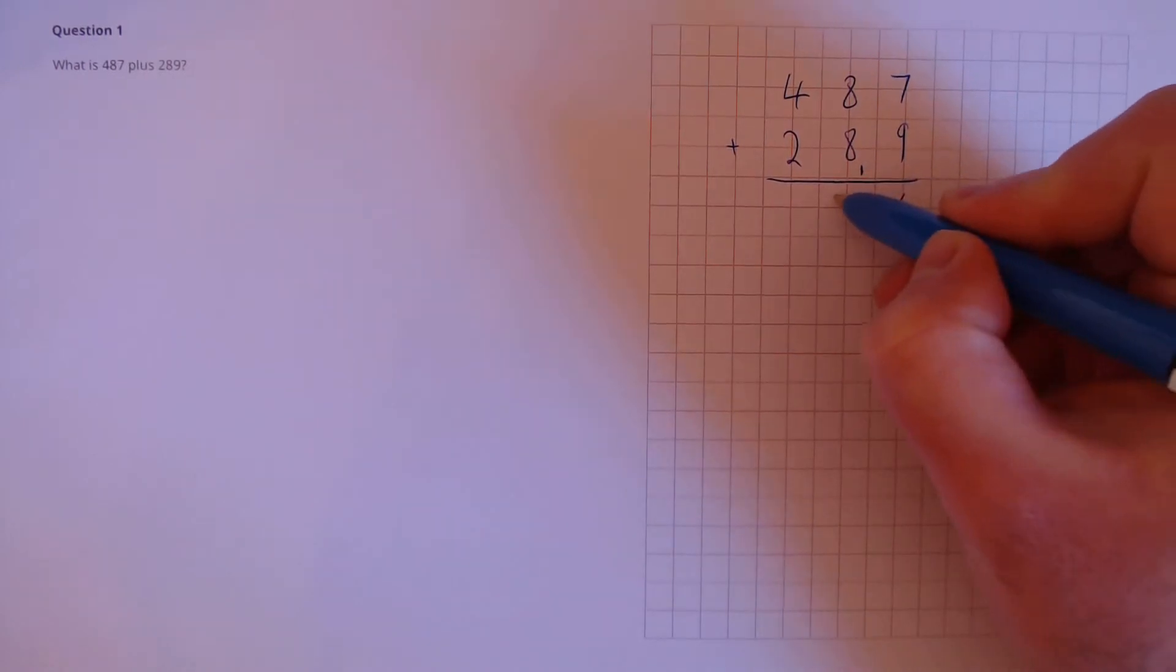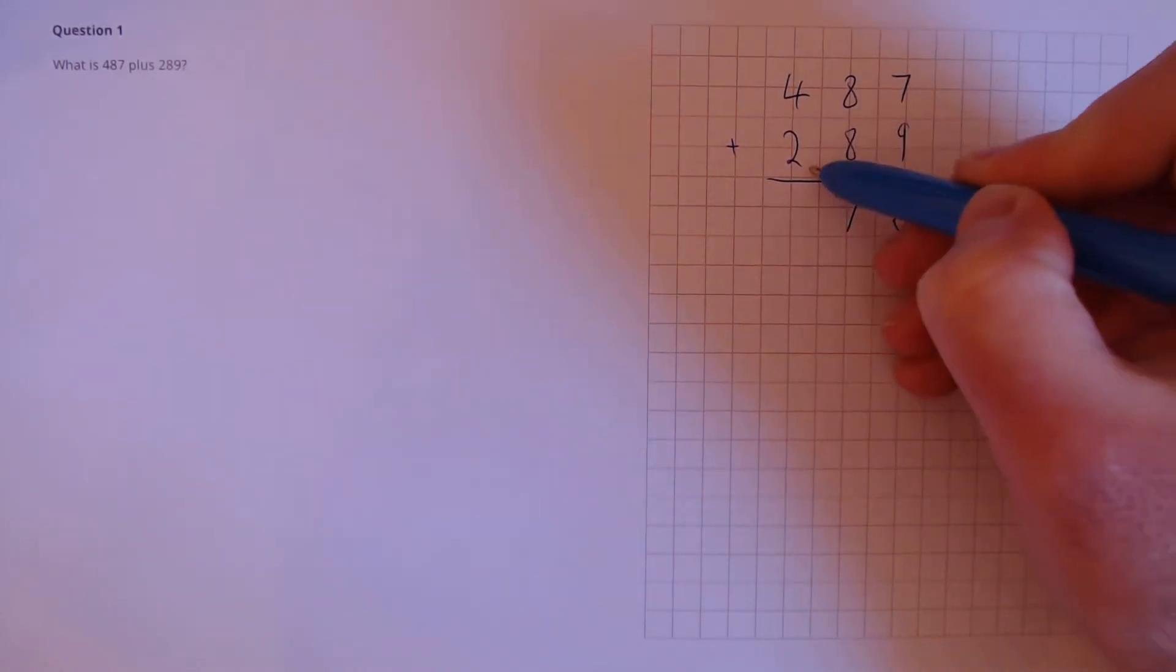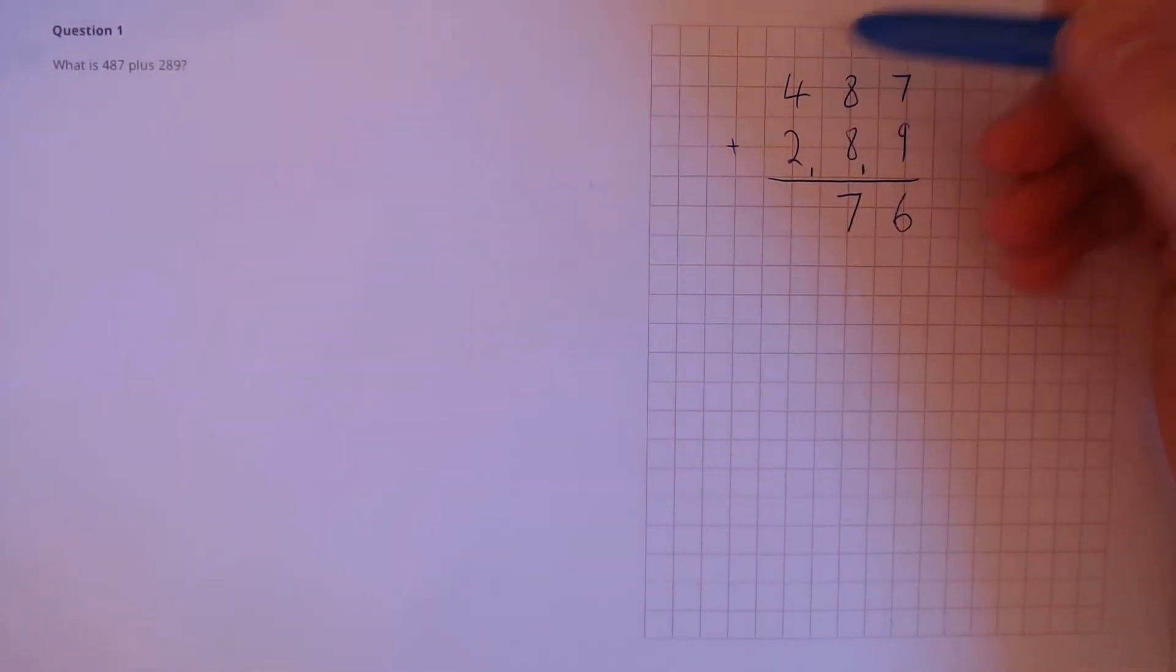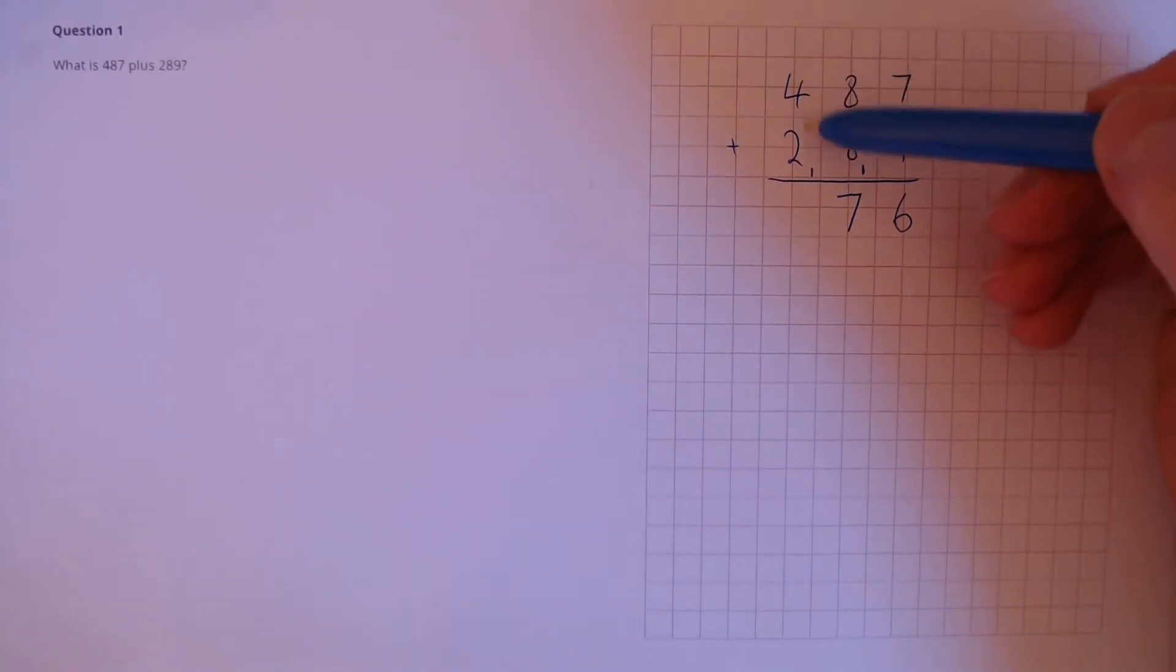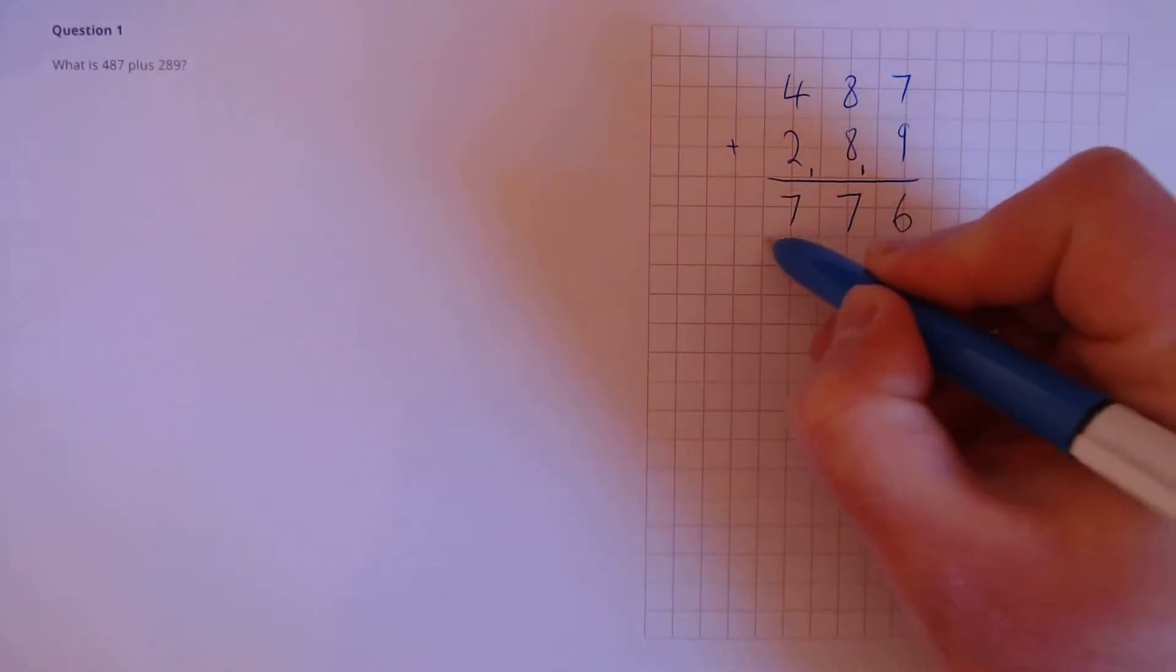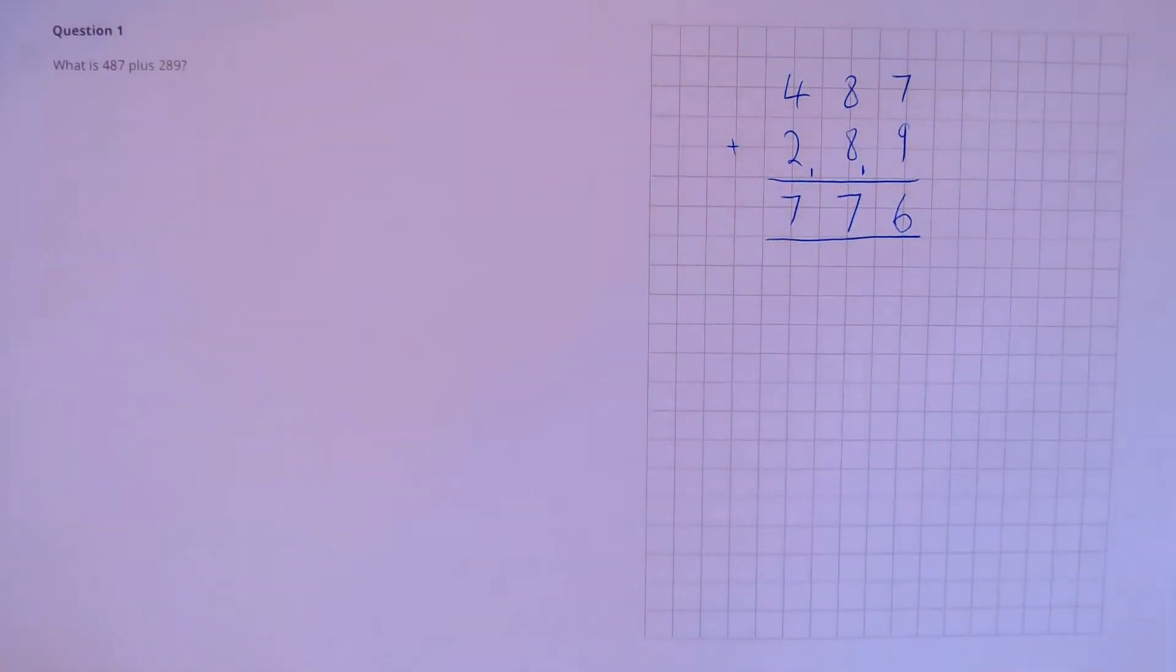And the same again. 7 goes here, and we need to carry over the extra 1 into the hundreds column. 4 plus 2 plus 1 is 7, and that's our answer, 776.